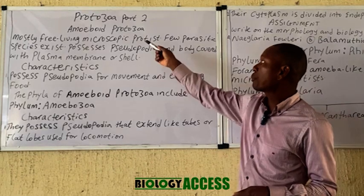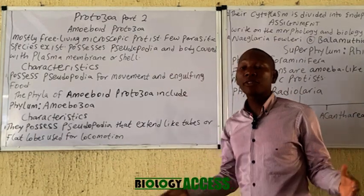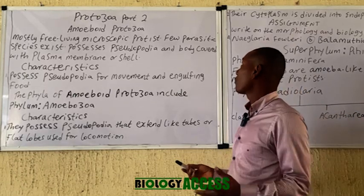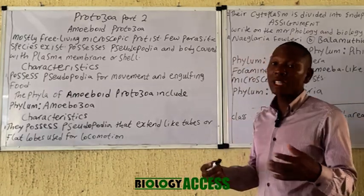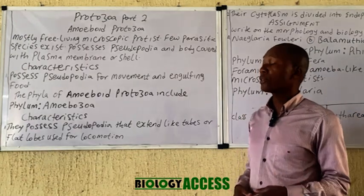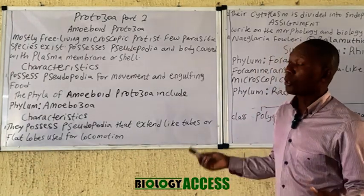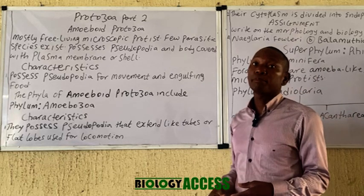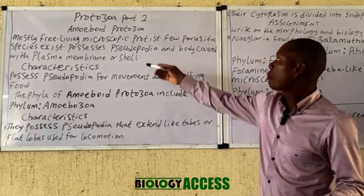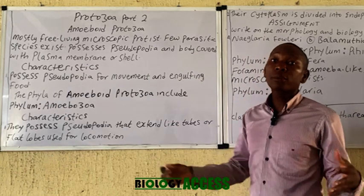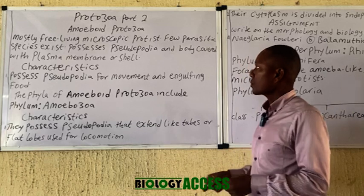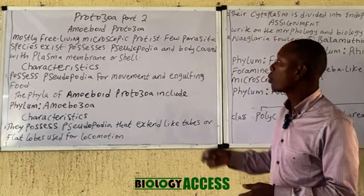The amoeboid protozoa are free-living protists, though there are a few parasitic species, possessing pseudopodia for movement as well as for capturing food. Their body is usually covered with a plasma membrane or a shell.